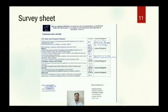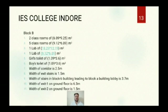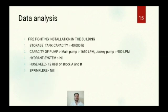A survey sheet is being provided on which a number of conditions have been mentioned, with two columns: one indicating whether the condition is satisfied or not, and another for areas of improvement. If a condition is not satisfied, the column is to be filled explaining what conditions need to be fulfilled and how. The next section includes the IES/IPS Academy data for Block A and Block B, covering all rooms, their sizes, heights, widths, the total building dimensions, number of classrooms, number of exit routes, and their widths.